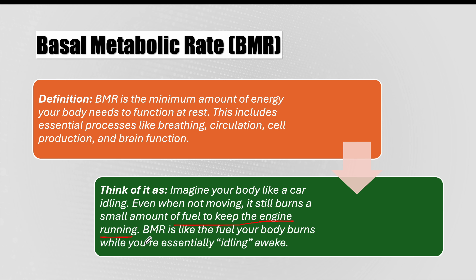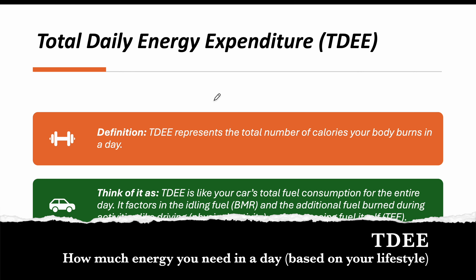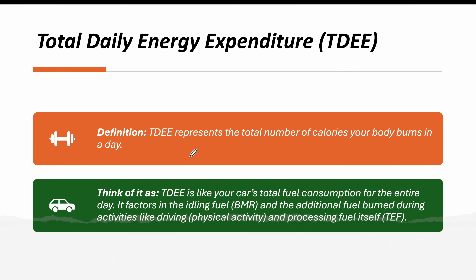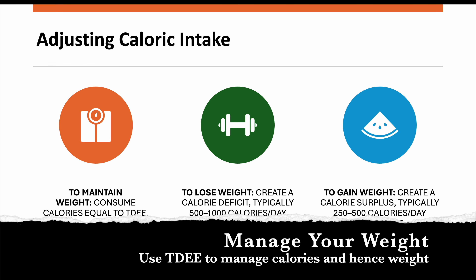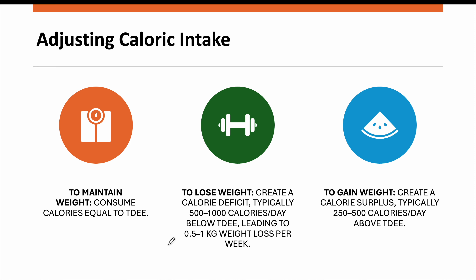Total Daily Energy Expenditure, or TDEE, represents the total amount of calories your body burns in a day. Using the car example, when your car is running, the total fuel consumption for the entire day is the TDEE.